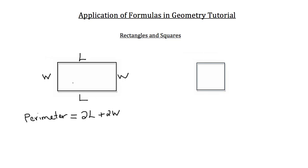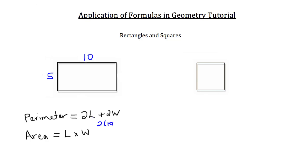The second important formula is area. To calculate the area of a rectangle you multiply the length times the width. For example, if the length is 10 and the width is 5, the perimeter is 2 times 10 plus 2 times 5 — that's 20 plus 10, so the perimeter is 30. The area is just 10 times 5, which gives an area of 50 units squared.